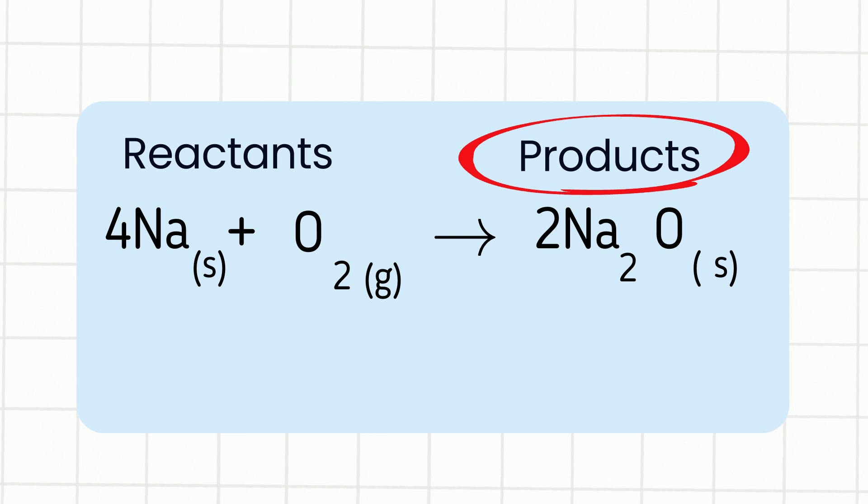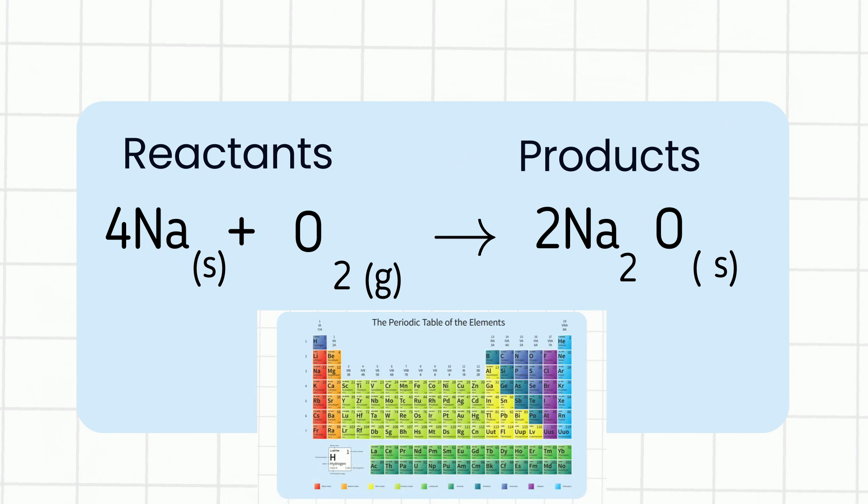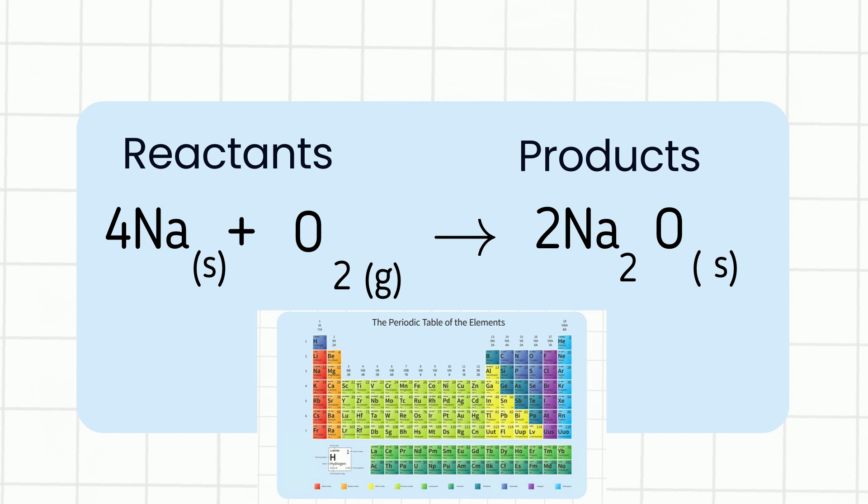The elements are represented by symbols found on the periodic table. All elements begin with a capital letter. Sometimes the elements are combined to create a compound. You will also see subscripts at the end of an element. Here's the subscript. The subscript only applies to the element it is found behind.